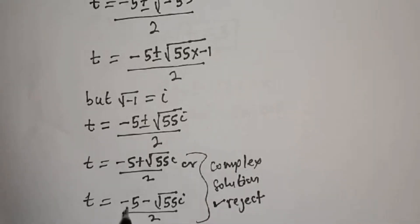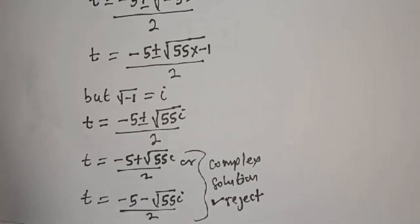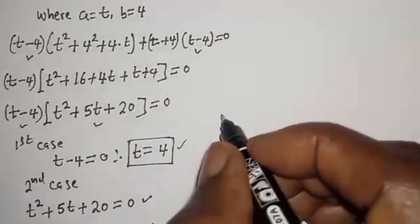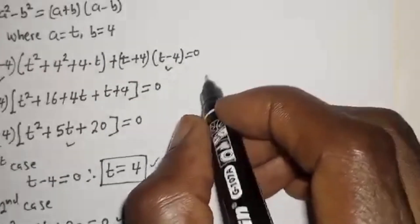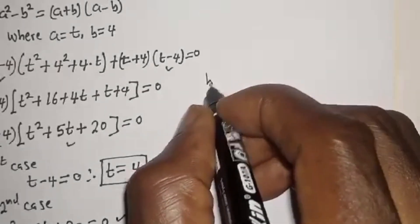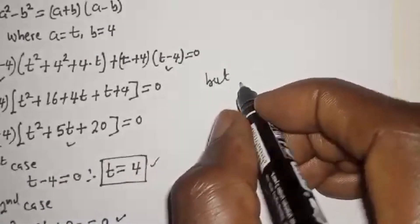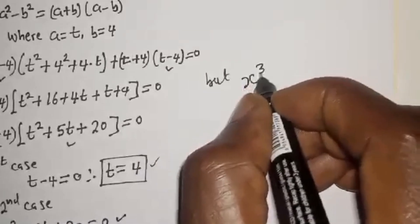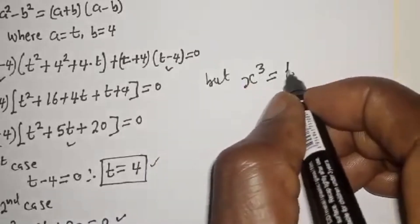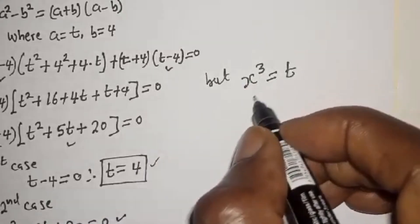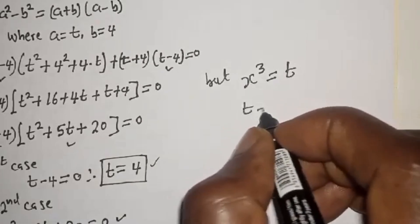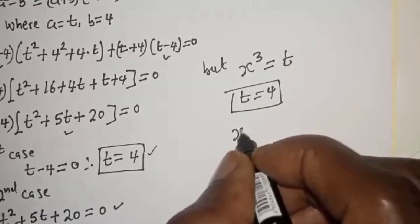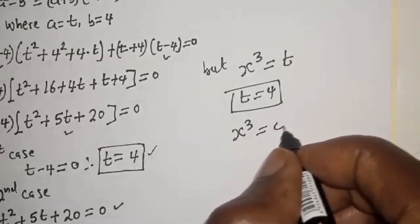Therefore the only solution we have is t equals 4. But s raised to the power 3 is equal to t, and since the only solution is t equals 4, we have s raised to the power 3 is equal to 4.